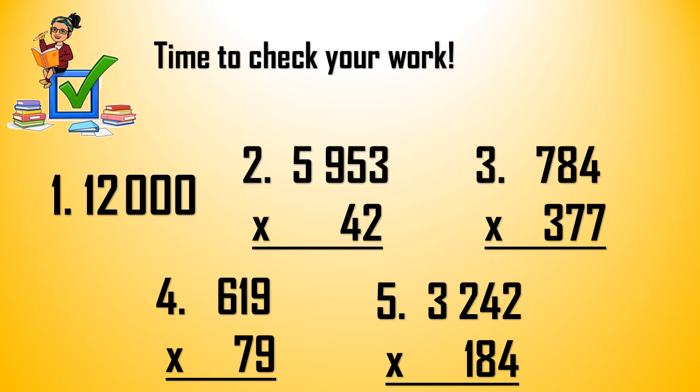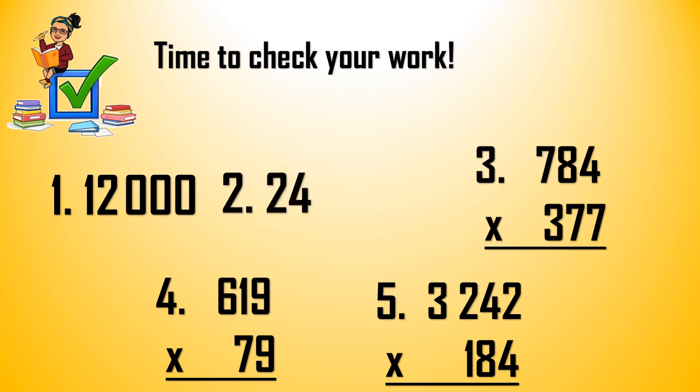For number 2, it will become 6,000 times 40. So we multiply 6 and 4. 6 times 4 is 24. And how many zeros? There are 4 zeros. So the answer is 240,000. Good job. If your answer is 240,000, check for number 2.